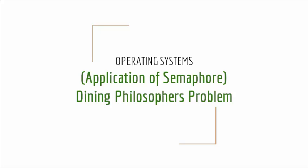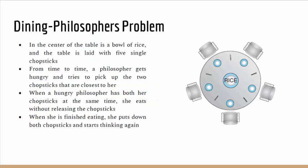Let us see the dining philosopher problem. In the center of a table is a bowl of rice, and the table is laid with five single chopsticks. From time to time, a philosopher gets hungry and tries to pick up the two chopsticks closest to her. When a hungry philosopher has both her chopsticks at the same time, she eats without releasing them. When she is finished eating, she puts down both chopsticks and starts thinking again.